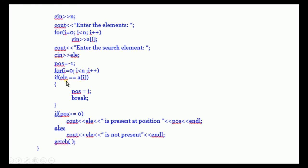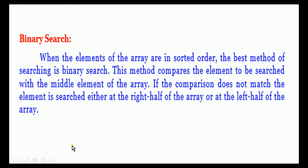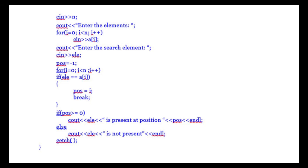The for loop: for i = 0, i < n, i++. If ele == a[i], set pos = i and break — break exits the loop since further searching is unnecessary. At the end: if pos >= 0, cout << "element is present at position" << pos << endl; else cout << "element is not present" << endl. Then getch(). In the next class we will see binary search and other methods.